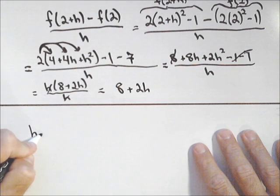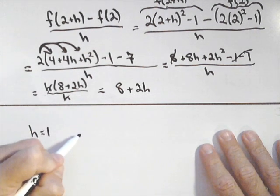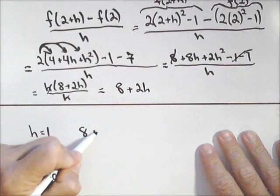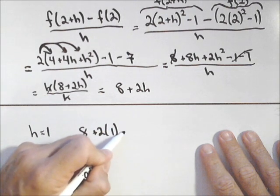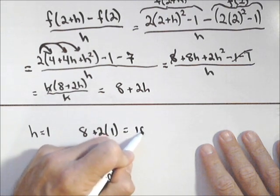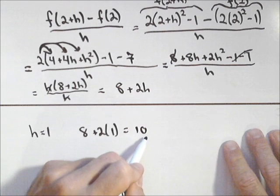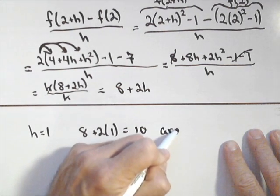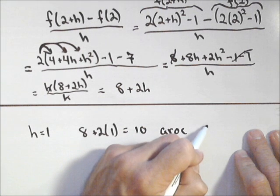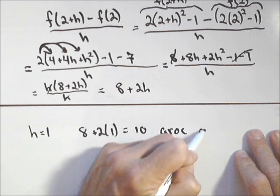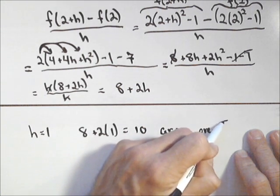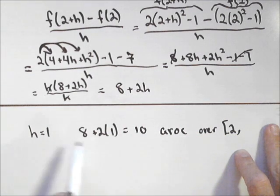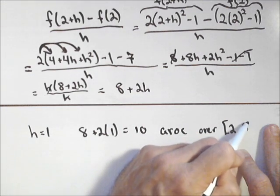So, for when h equals 1, we get 8 plus 2 times 1, or 10. Now, remember what that is. That is the average rate of change between where we started. We were asked to start at 2, and a point that is 1 unit away from 2, so 3.